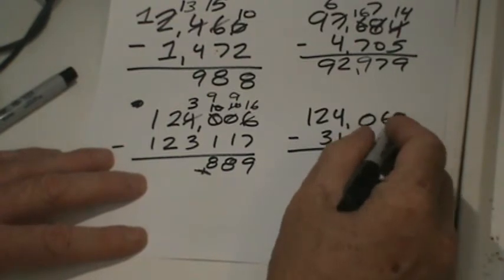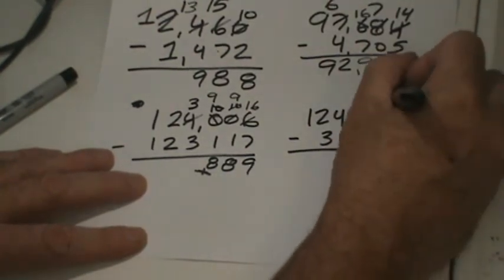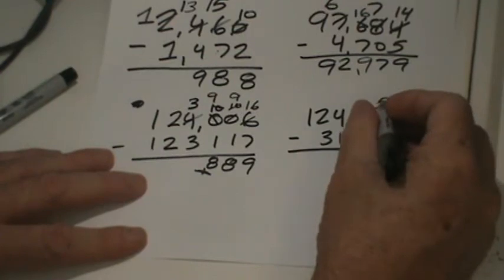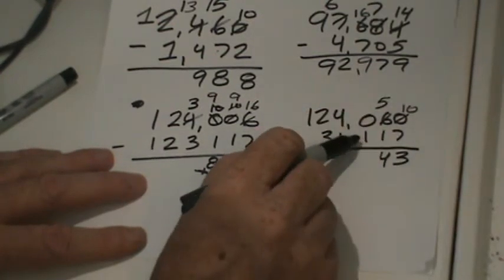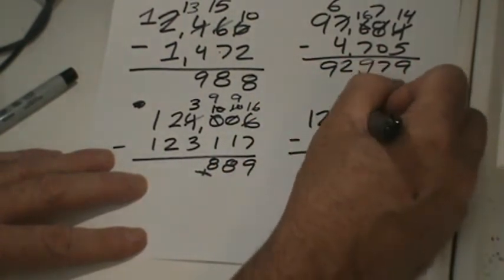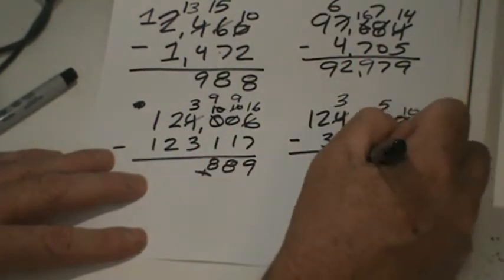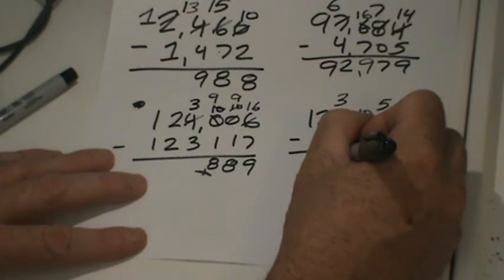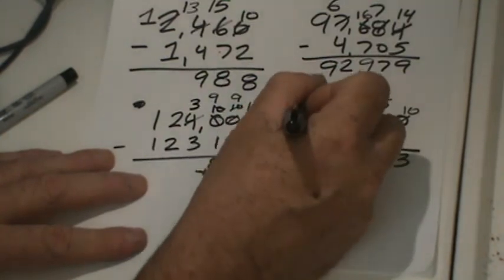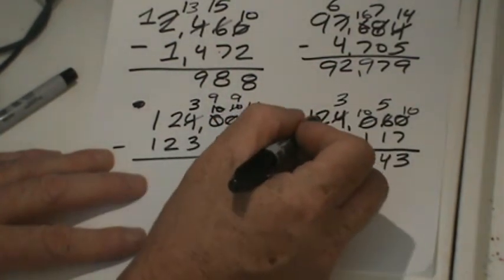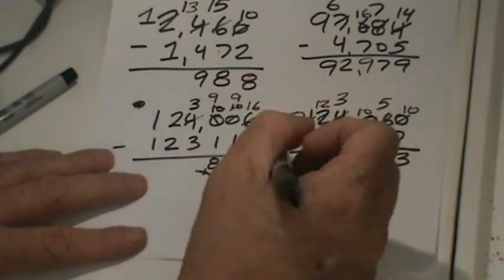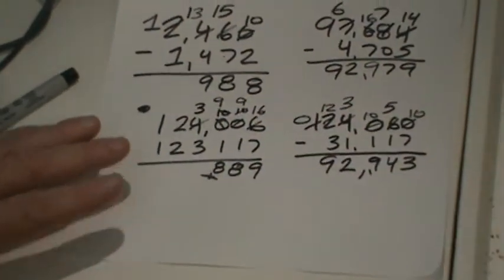Right away I can't take seven ones away from zero, so I'm going to decompose the tens: make those five tens, and make this ten ones. Ten minus seven is three. Five tens minus one ten is four. Stuck — can't take one hundred away from zero hundreds, so we're going to decompose that to three thousands and this will become ten hundreds. Ten hundreds minus one hundred is nine. Three thousands minus one thousand is two thousands. Can't take three ten-thousands away from two ten-thousands, so this is going to become zero and I'm going to give ten ten-thousands to these two ten-thousands to make twelve ten-thousands. Twelve ten-thousands minus three ten-thousands is nine ten-thousands.